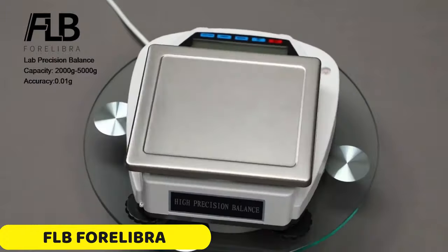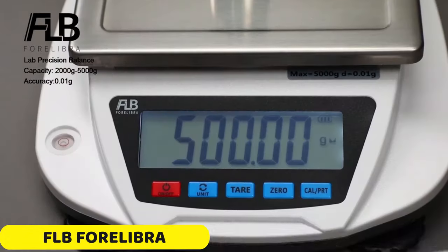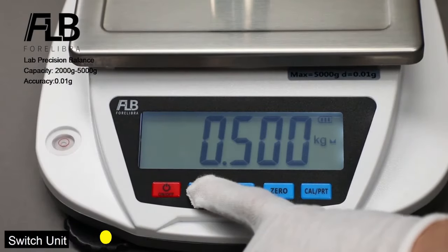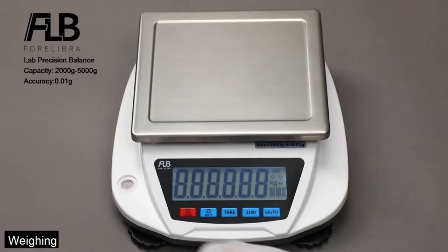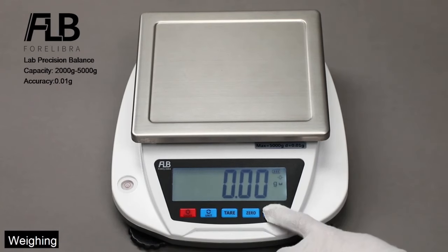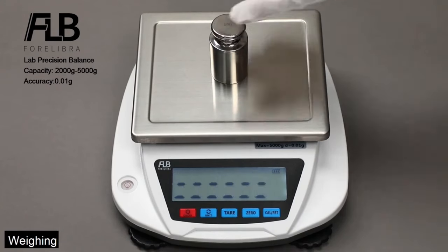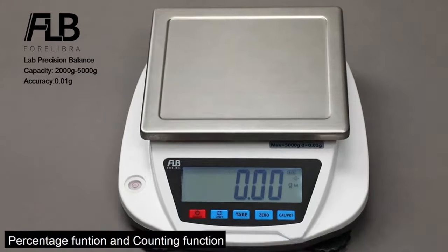Number 3: FLB4 Libra Analytical Balance. The FLB4 Libra Analytical Balance is a precise and accurate tool designed for laboratories, kitchens, and various applications. It belongs to the GM 0.01g series and is CE-certified, ensuring compliance with European safety standards. The balance is suitable for scientific experiments, research, and data analysis.